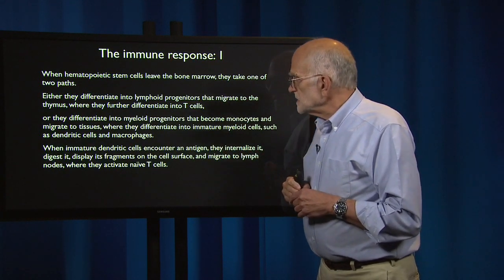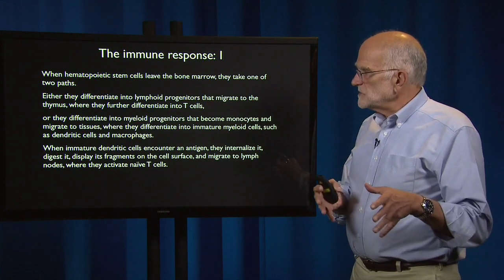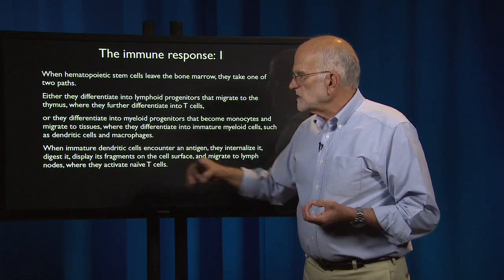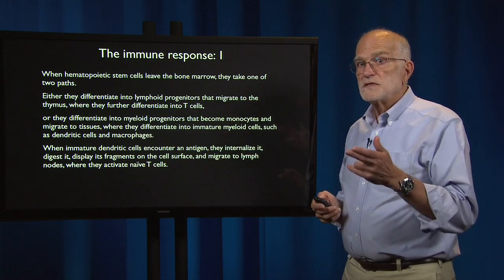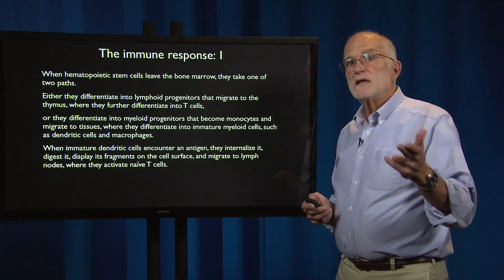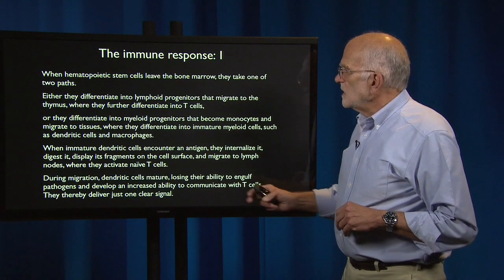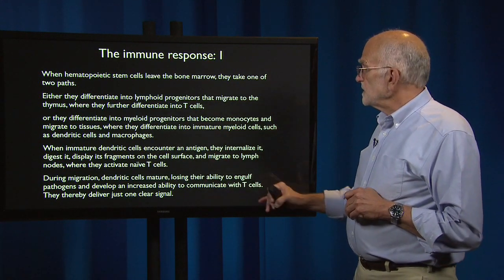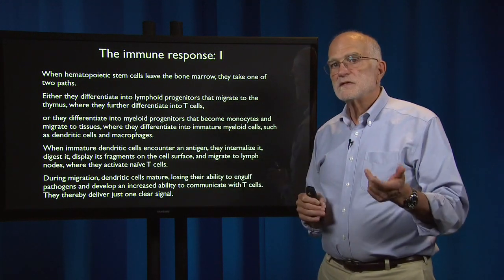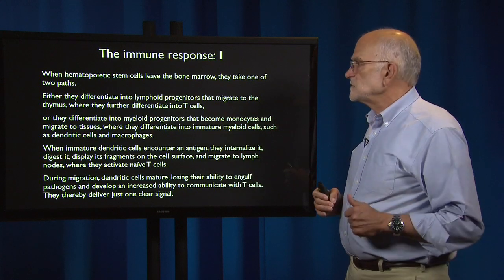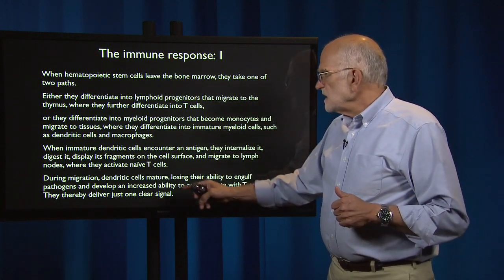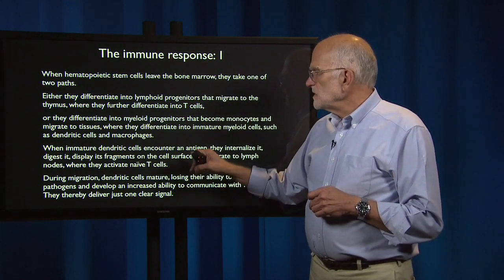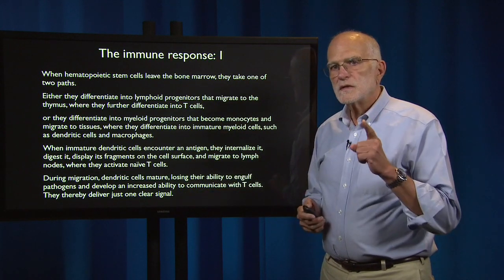When immature dendritic cells encounter an antigen, they internalize it, digest it, take fragments of it, put them onto their cell surface, and migrate to lymph nodes, where they activate so-called naive T cells — T cells that have not yet been put into action. During migration, the dendritic cells mature: they lose their ability to engulf pathogens, ensuring they express only one kind of pathogen signal when they encounter a T cell, and they develop an increased ability to communicate with T cells. So they arrive at the lymph node able to deliver one clear signal.